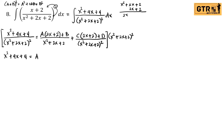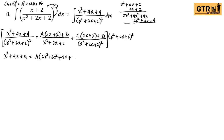Multiplying (x² + 2x + 2)(2x + 2): 2x times x² = 2x³, 2x times 2x = 4x², 2x times 2 = 4x, 2 times x² = 2x², 2 times 2x = 4x, 2 times 2 = 4. Adding these up, we have A times (2x³ + 6x² + 8x + 4).